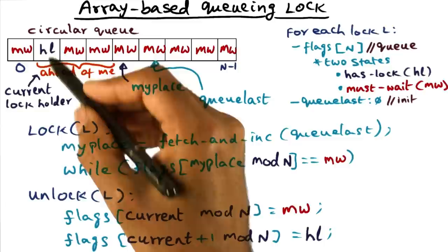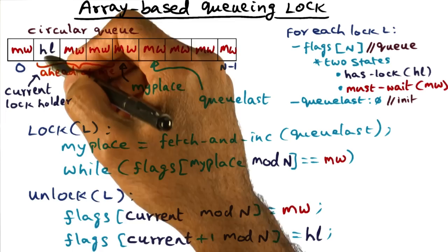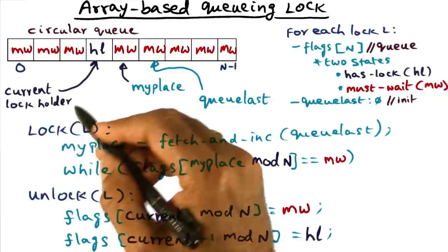And therefore, what he's doing is he is saying, current plus one mod N is going to be set to HL. And so, that guy would have been waiting in this position, and so he'll get the signal, and therefore, he'll be ready to go, and he can get into the critical section and do whatever he wants to do with the data structure that is protected by this particular lock.